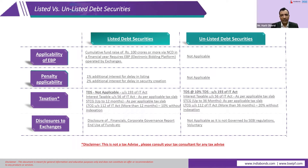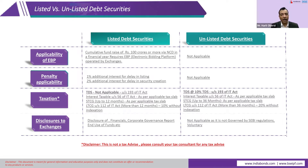EBP stands for Electronic Bidding Platform. Exchanges have designed a platform that allows issuers to issue securities through EBP. If an issuer has a cumulative requirement to raise more than 100 crores in a year, they must use the EBP platform. The biggest advantage is that a wider audience can participate, it provides a transparent price discovery mechanism, improves efficiency, and reduces costs from the issuer's perspective. This is not applicable for unlisted debt securities.